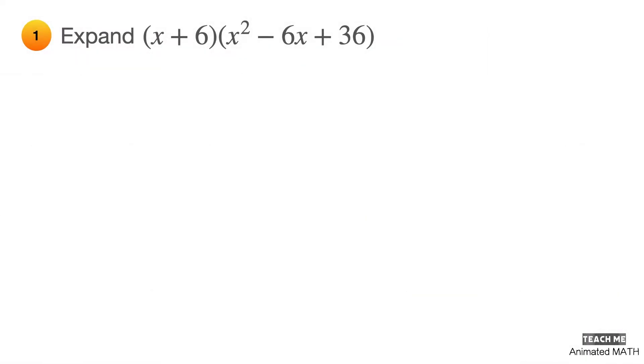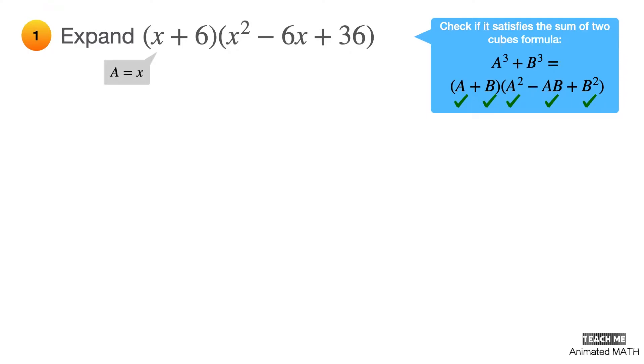We'll start with something simple and easy. The first thing you need to do is to check if the expression satisfies the sum of two cubes formula. Look for the probable values of a and b. Then, compute a squared, ab, and b squared so you could compare it to the trinomial part of the polynomial. In this case, a is equal to x and b is equal to 6.